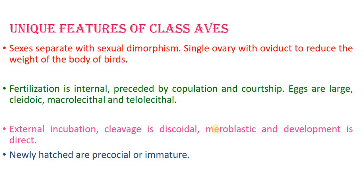Development is direct — the young ones resemble the parents. Newly hatched young in Carinitae are precocial or immature and dependent, while in Ratitae the newly hatched are mature and independent.